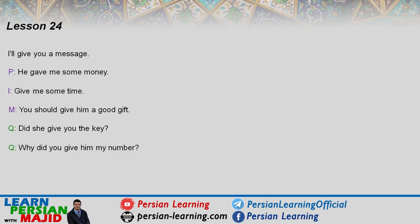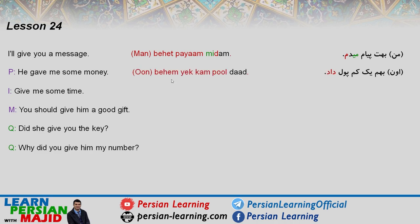Let's begin examples with the basic verb DADAN. 'I'll give you a message' — remember we say this in present simple in Persian — BEHET or BE TO PAYAM MIDAM, or YEP PAYAM MIDAM. 'He gave me some money' — past tense — BEHEM or BE MAN YEKKAM PUL DAD. Note that YEKKAM means 'a little' but is used for amounts.